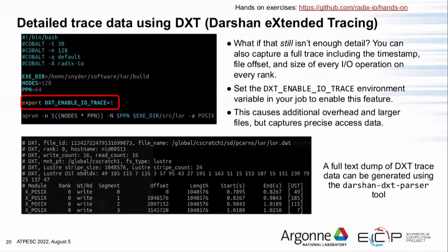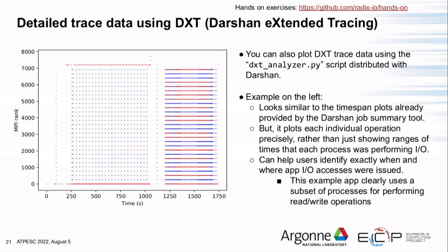This tracing creates overhead in runtime, memory usage, and log file sizes, but may be worth it depending on your needs. It's not enabled by default to avoid all applications on supercomputers generating this much characterization data. There's a DXT-specific parser to dump the text version of all trace data, and a simple analysis script for generating a plot of ranks' read and write activity over time using DXT data — similar to the time span plots but with much finer-grained details.